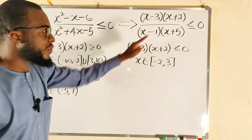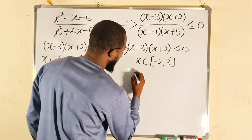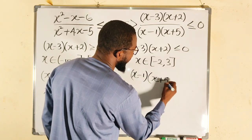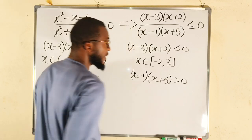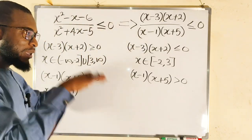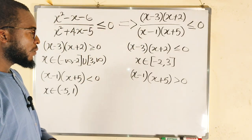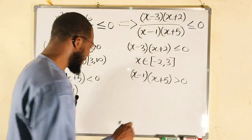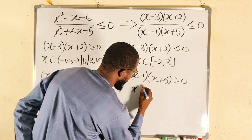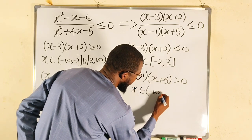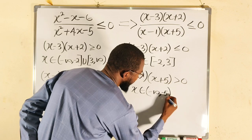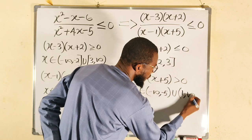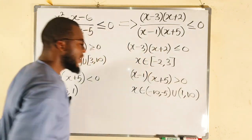Then we take the denominator (x minus 1)(x plus 5) greater than zero — it cannot be equal to zero because the bottom cannot be zero. The solution is from negative infinity to negative 5 (open, not included) union from positive 1 to positive infinity.